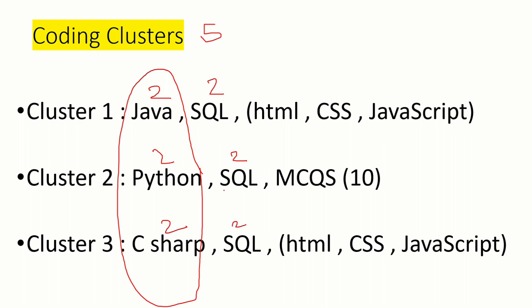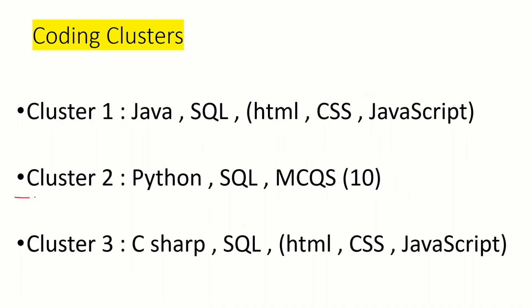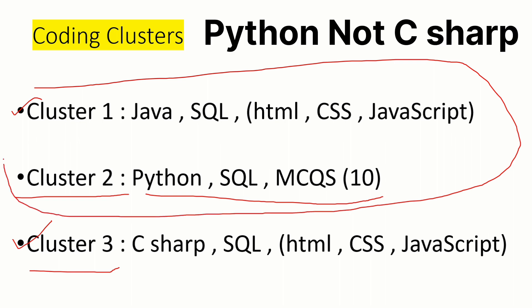The last question is one question from JavaScript, CSS, and HTML — but only for Cluster 1 and Cluster 3. For Cluster 2, you get 10 MCQ questions from cloud-based topics and AWS. These 10 MCQs are much easier compared to HTML, CSS, and JavaScript. So Cluster 2 is the easiest cluster. Previous year students from Cluster 2 easily completed the technical assessment. Most selections came from Java cluster and C# cluster (Cluster 3).